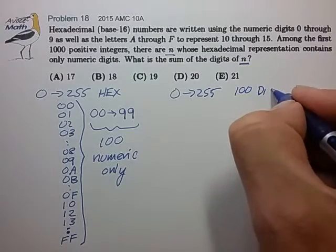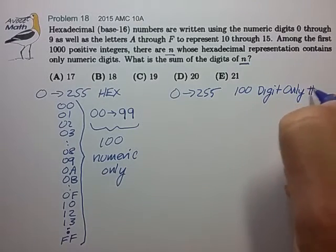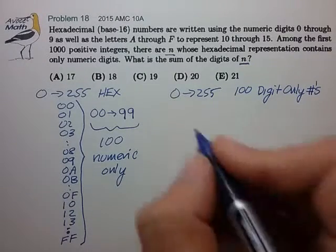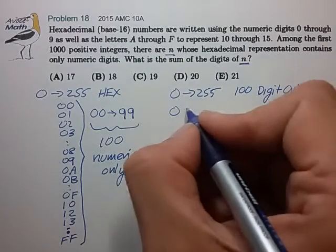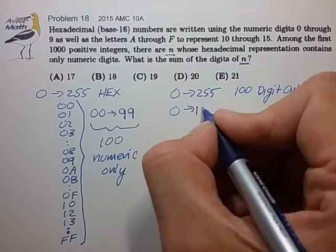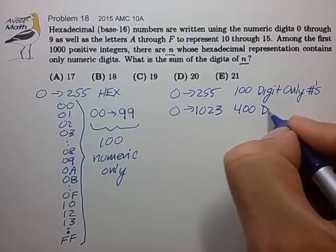So if we were to multiply that range by 4, we would have 400 digit only numbers.